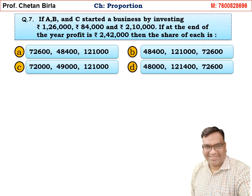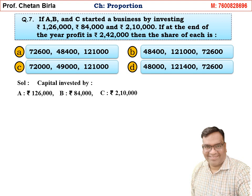Question 7: A, B, and C started a business by investing Rs. 1,26,000, Rs. 84,000, and Rs. 2,10,000. If at the end of the year the profit is Rs. 2,42,000, find the share of each A, B, C — Options A, B, C, D.